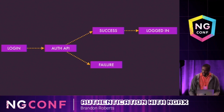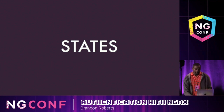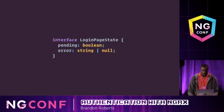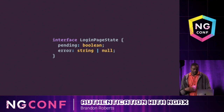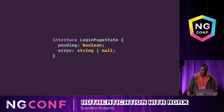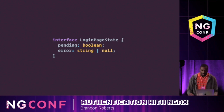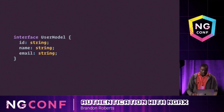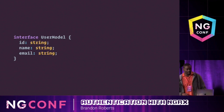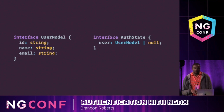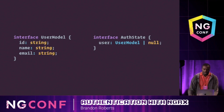Now let's talk about states. The two states we're going to cover are the login page and the authentication state. The login page is described as an interface with two main properties: a pending property, which can be used to disable the form or display spinners while the request is being processed, and an error property to display relevant error messages back to the user in case of a failure. The authentication state has a user model containing what's returned from the API upon successful authentication. The auth state captures this user once authentication is successful and holds any additional information about the current user.